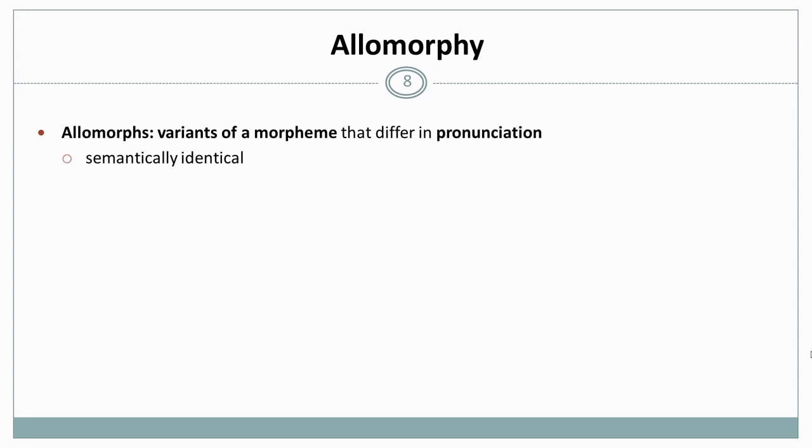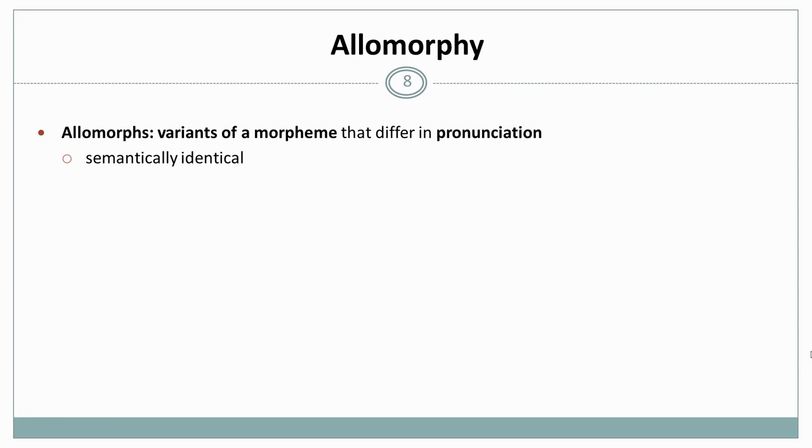Allomorphs are variants of a particular morpheme that differ in their pronunciation. They are semantically identical. So for example, in English, the English past tense morpheme -ed is realized by three allomorphs.